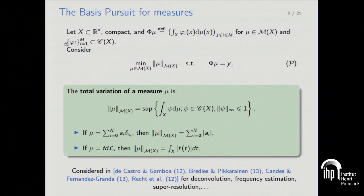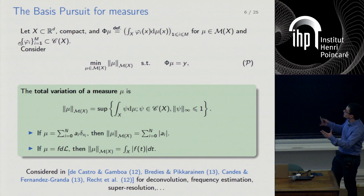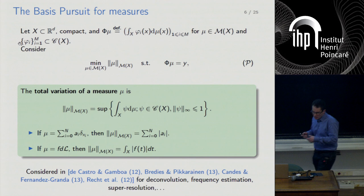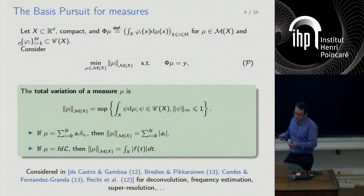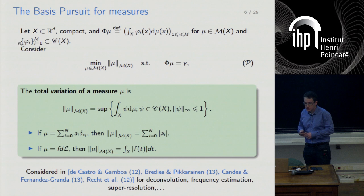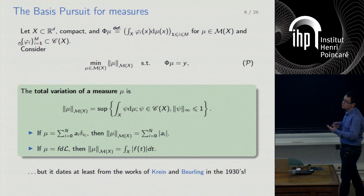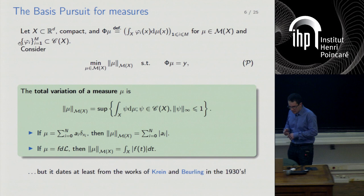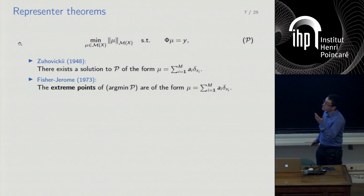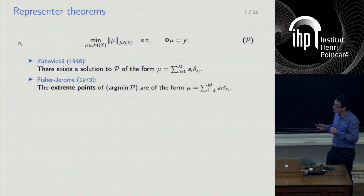The main interest of this model is that you do not impose a grid, removing basis mismatch phenomena and grid artifacts. This triggered a lot of interest following pioneering work by De Castro and Gamboa, Christian Bredis and Pikaraninen, and the massive interest came after the paper by Candès and Fernandez-Granda. Such models are used in signal processing for deconvolution, frequency estimation, and super-resolution — but it's much older, dating back to Crane and Berling's generalized moment problem in the 1930s. Curiously, this model provides one of the oldest representer theorems.